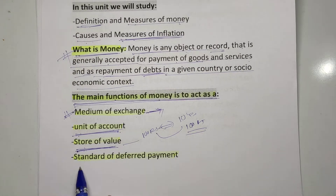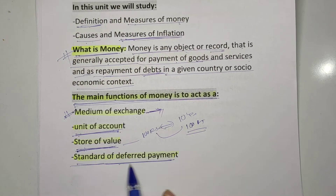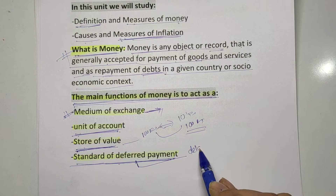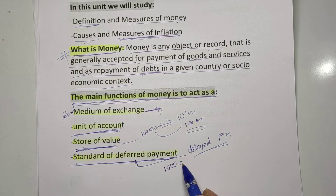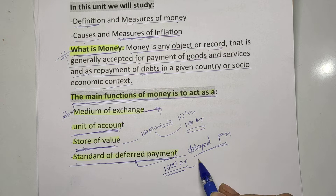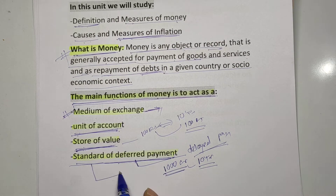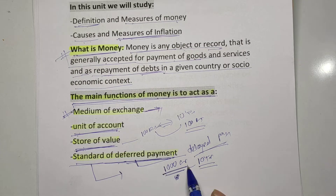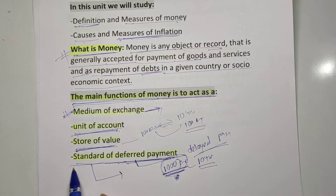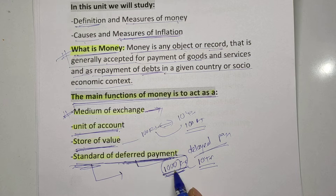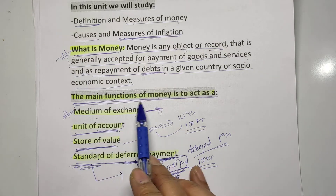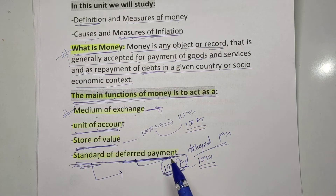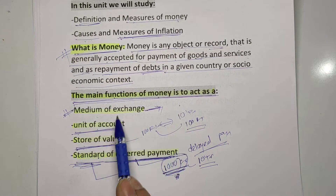The fourth function is the standard for deferred payment — deferred means delayed payment. Suppose you have to pay 1,000 crore rupees after ten years; that 1,000 crore will remain 1,000 crore — that is the standard for deferred payment. Remember these four main functions of money because IIBF may ask which of the following is NOT a function of money.